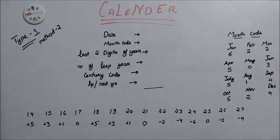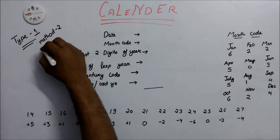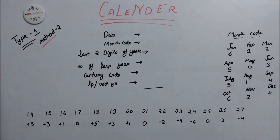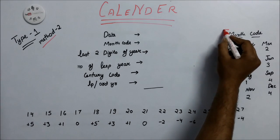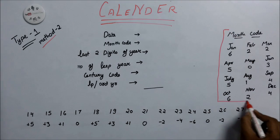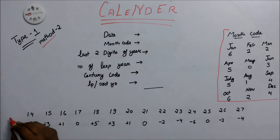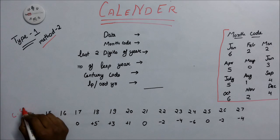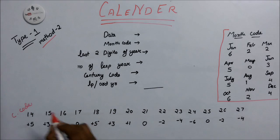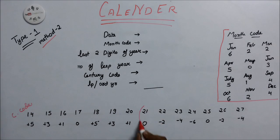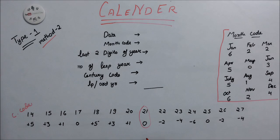Now we solve Type 1 questions using Method 2. In this method we need to remember month codes — January, February, March, and so on, each month has its own code. We also need to remember the century code table. We always assign 0 to the current century.